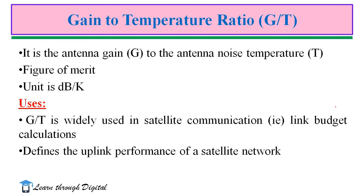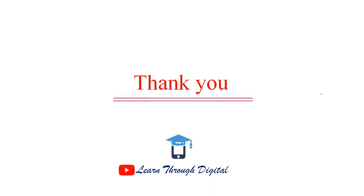Next, we are going to talk about Gain to Temperature ratio. Gain to Temperature ratio is the ratio of antenna gain to the noise temperature of the antenna T. The unit is dB per Kelvin. It is a figure of merit in the characterization of antenna performance. Gain to Temperature ratio is generally used in satellite communication — it is used in link budget calculations and also defines the uplink performance of a satellite network. I hope you would understand the concept of antenna temperature. Thank you.